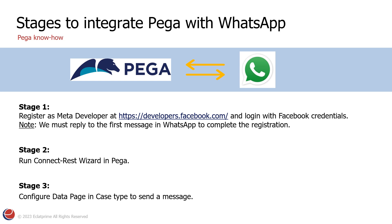Let's integrate Pega with WhatsApp. For that we have three different stages. The first one is to register as a meta developer and complete the configurations there. The second stage is to take the URL received after configuring the application in the meta developer portal and run the connect REST wizard in Pega. After the connect REST wizard is done, a data page will be created, which will be used in the case type to send a message.